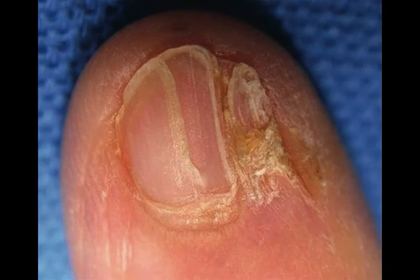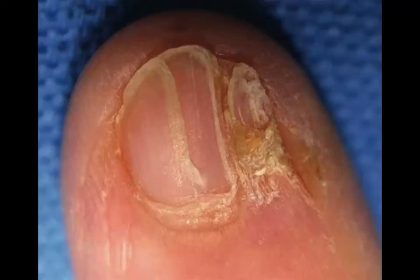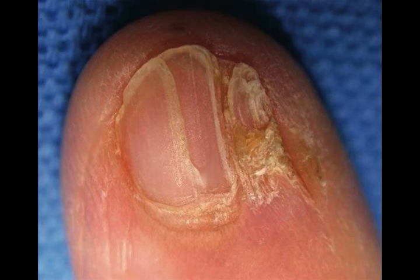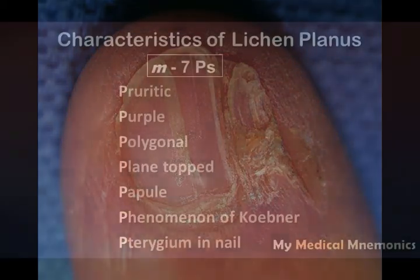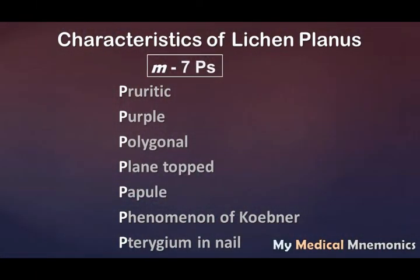The seventh P is pterygium — a nail change seen in patients with lichen planus. In pterygium, the proximal nail fold overgrows and fuses with the nail bed. This is a characteristic nail finding in lichen planus.